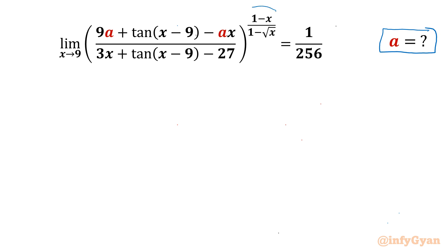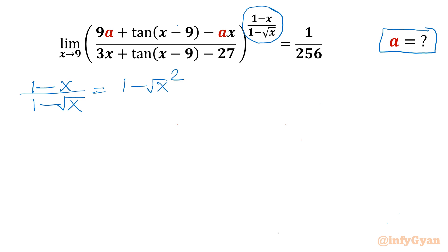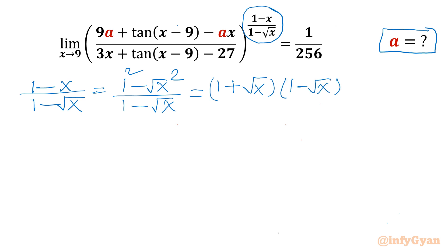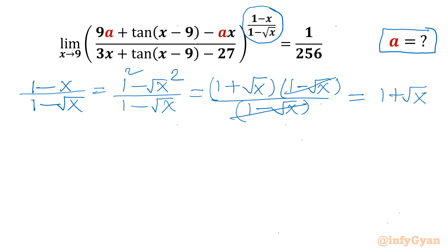Let's get started with our power exponent. I will simplify (1 − x) over (1 − √x). I can write the numerator as (1 − √x) whole squared, using the identity a² − b², so 1² − (√x)² = (1 + √x)(1 − √x). Dividing by (1 − √x), we get 1 + √x as our power.